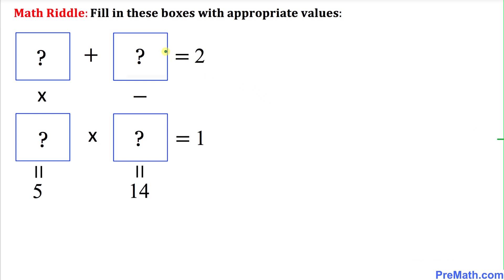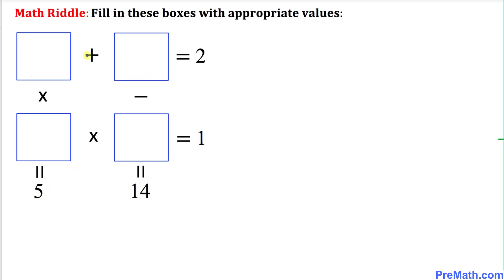Welcome to Pre-Math. Here is our math riddle — we are going to fill in these boxes with appropriate values so that when we add, subtract, or multiply, we get the values 2, 1, 14, and 5. As a first step, I'll give each box a name: this box is A, this box is B, this box is C, and this box is D.